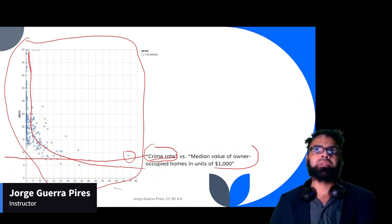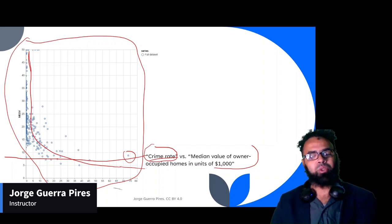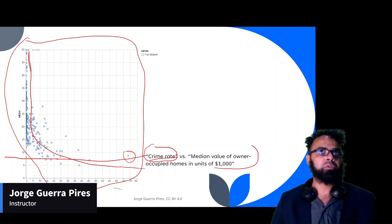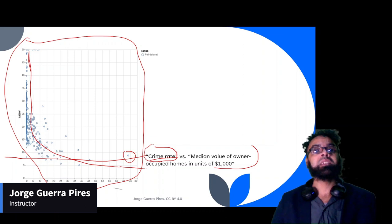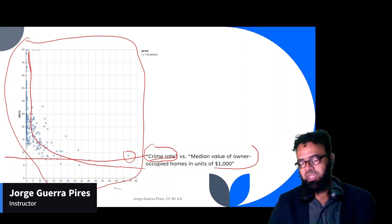Sometimes the model can be used even to model what you already know, and the model will automate the way to do that. Machine learning is not always about being better than humans. Sometimes machine learning is just about automation — being as good as a human, or at least good enough to replace humans in a very fast way to make classifications.